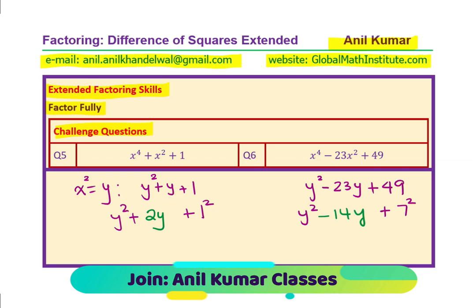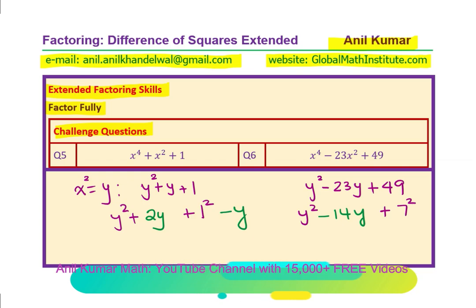So that means I could think about y square plus 2y plus 1 square minus y. Now you can see 2y minus y is indeed y, correct? Right?